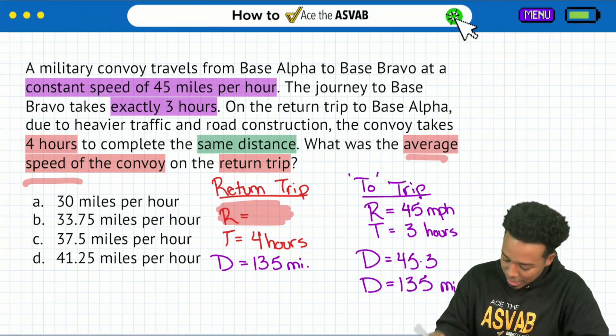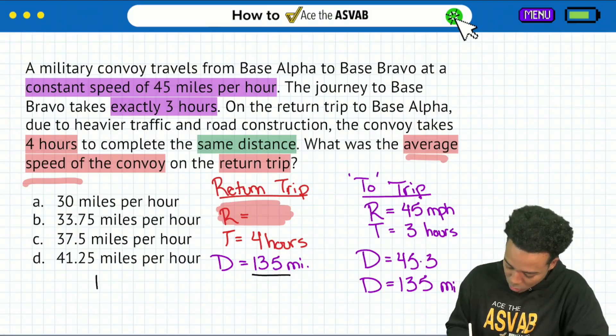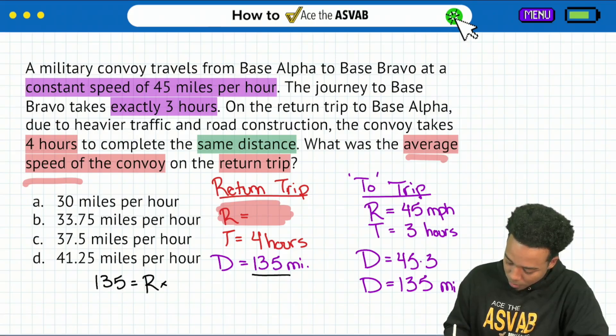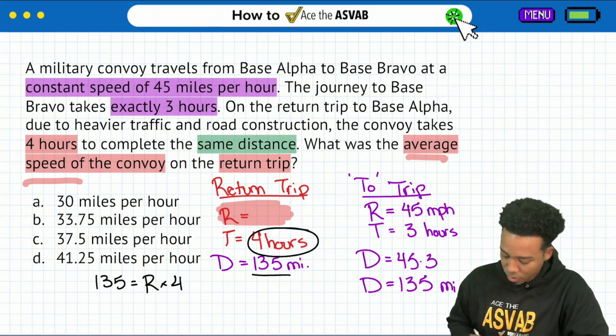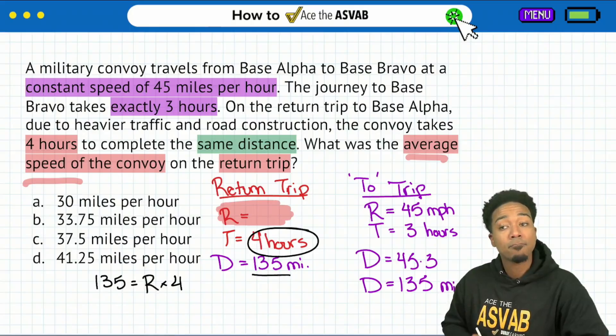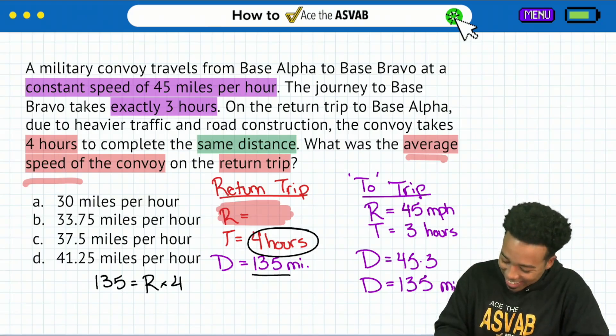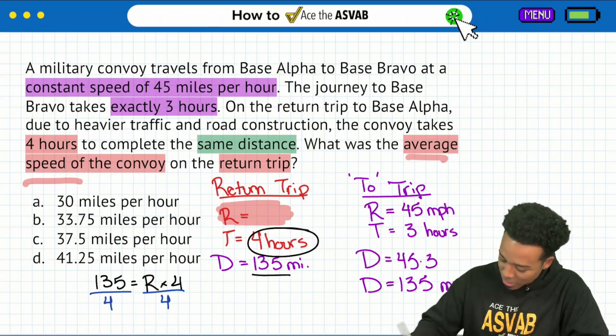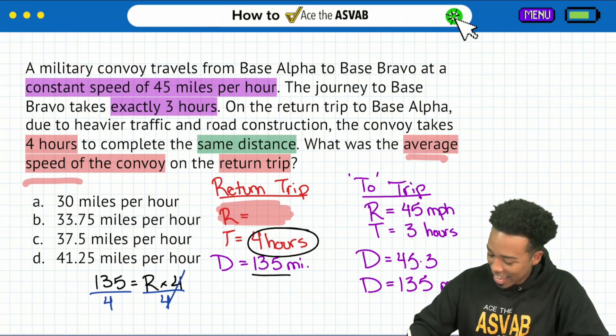So now let's go ahead and do that. Let's go ahead and set this up again. Distance 135 equals my rate, which is what I'm looking for, multiplied by time, which is four hours. Now that we have that, all we need to do is divide both sides by four and we're done. So let's check this out right here. Divide by four, divide by four.